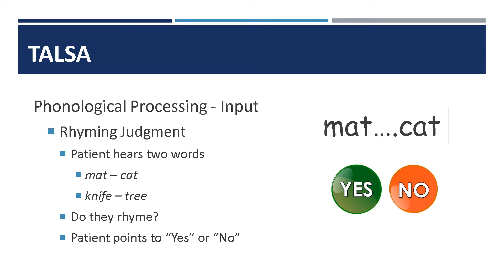A number of TULSA subtests are designed to assess phonological level processing. In the rhyming judgment test, the patient hears two words, such as mat and cat, or knife and tree. Their task is to indicate if they rhyme by pointing to the yes or no button. This assesses input processing, or in other words, auditory comprehension.